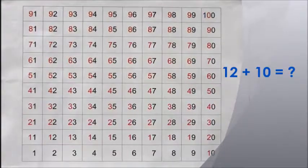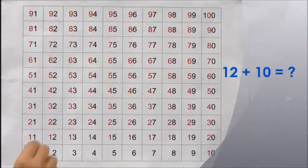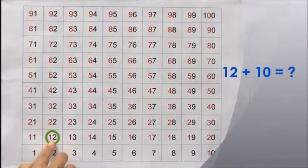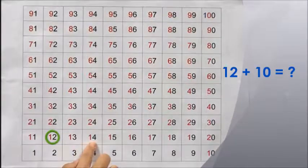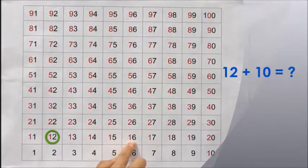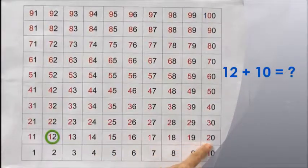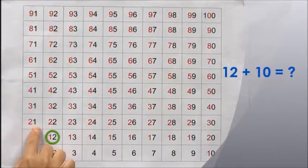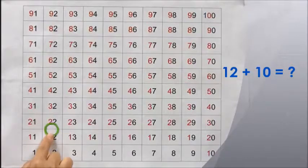Plus 10. We shall start from 12. Let's move 10 steps forward: 1, 2, 3, 4, 5, 6, 7, 8, 9, 10. 12 plus 10 equals 22.